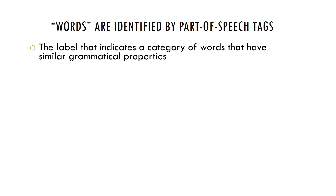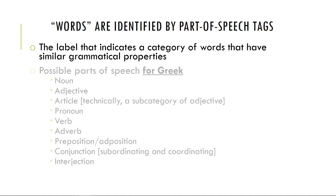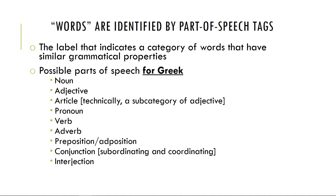The part of speech is the category of words that people have decided have similar grammatical properties. Grammatical terms are very hard to explain — they often fall in the category of 'I know it when I see it,' and even linguists can't define things in a way that makes everyone happy. In Greek, if you look at any grammar book, the possible parts of speech are pretty limited — we essentially have nine things.